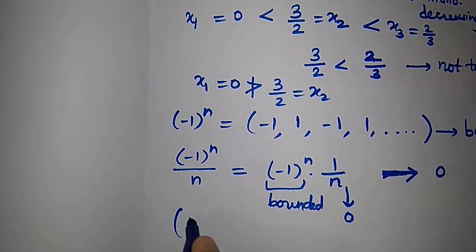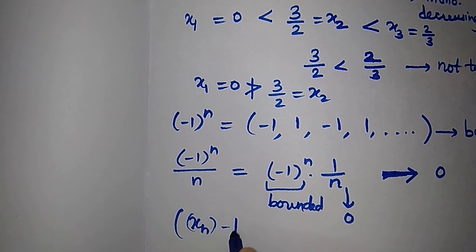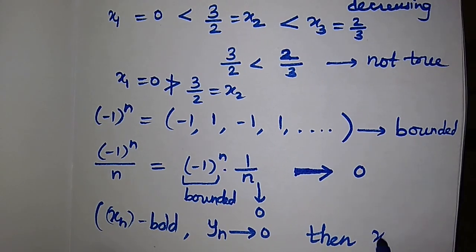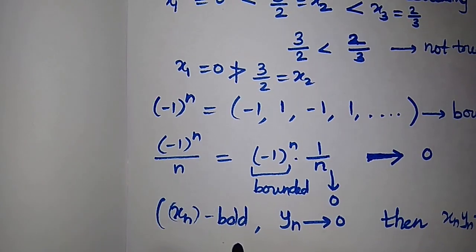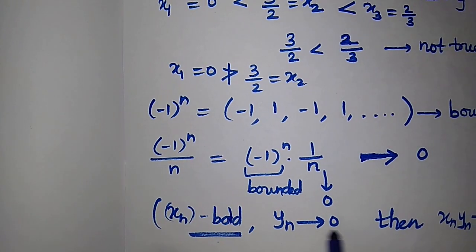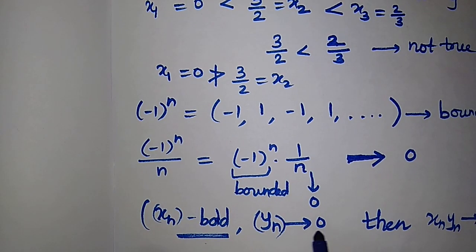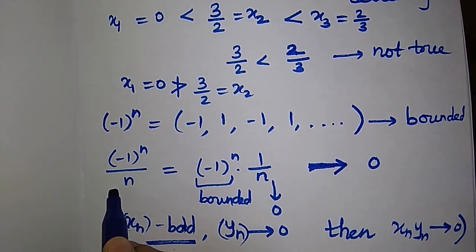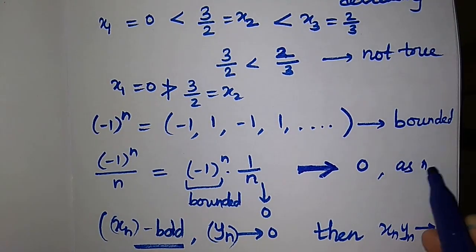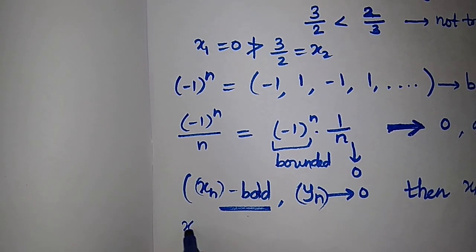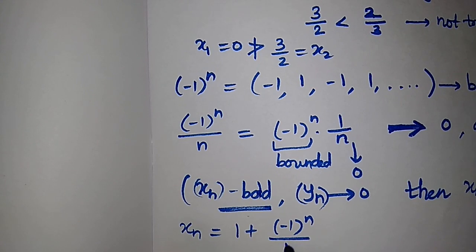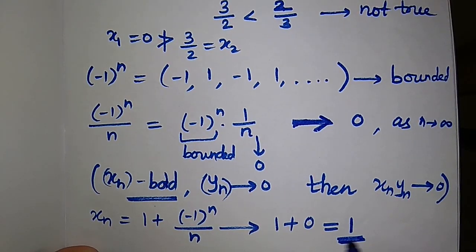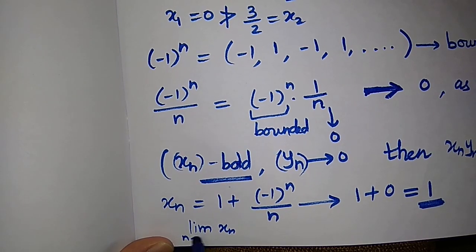The result states: if xₙ is a bounded sequence and yₙ converges to 0, then xₙ·yₙ converges to 0. Here (-1)ⁿ/n converges to 0. Therefore, the original sequence xₙ = 1 + (-1)ⁿ/n converges to 1 + 0 = 1. So the limit of xₙ as n→∞ is 1.